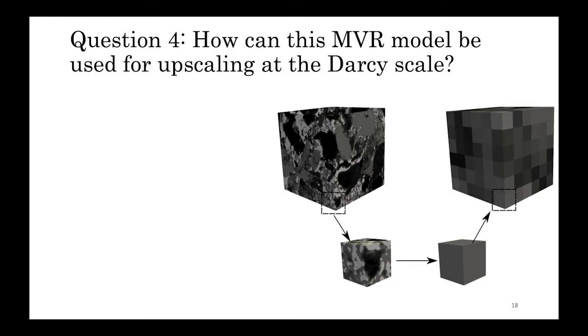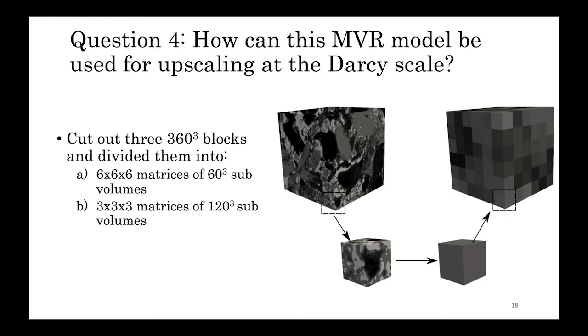And finally, the question of the day, how can this machine learning regression model be used for upscaling to the Darcy scale? To answer this, we cut out three blocks of 360-cube voxels from the lower portion of the image that had not been used in the regression. We then divided each of these into both a 6x6 matrix of 60-cube sub-volumes and a 3x3 matrix of 120-cube sub-volumes.